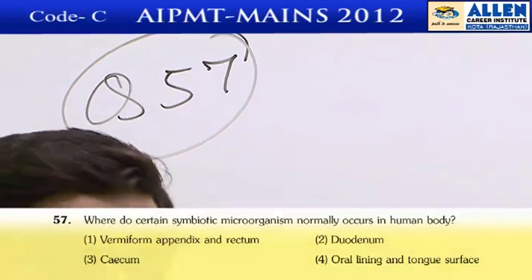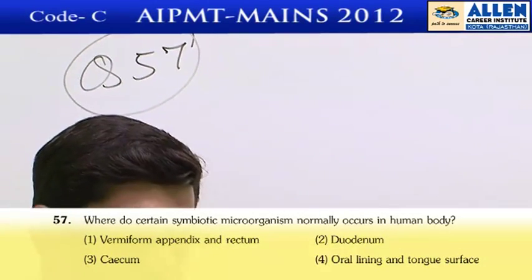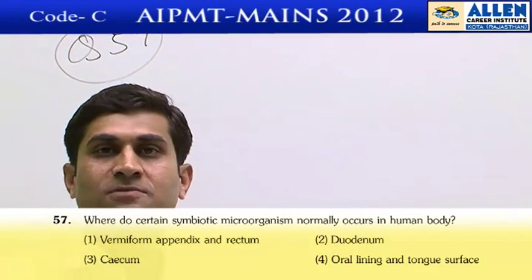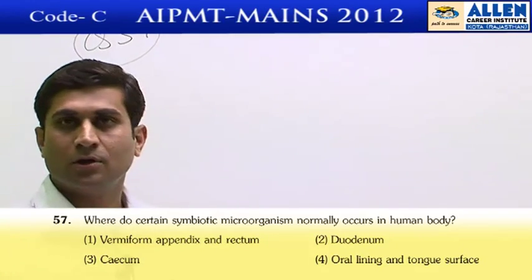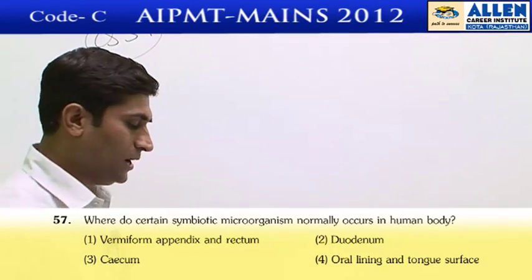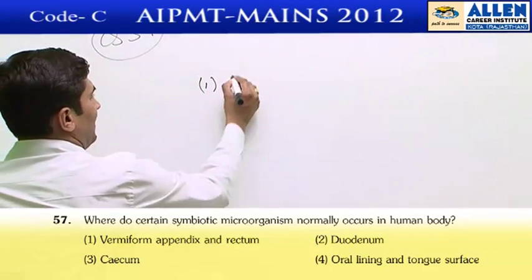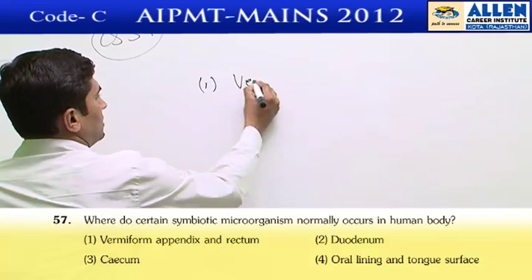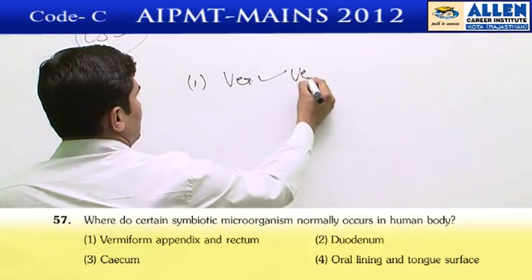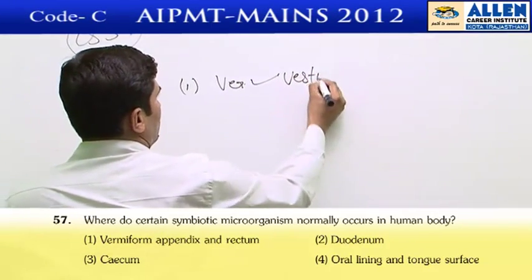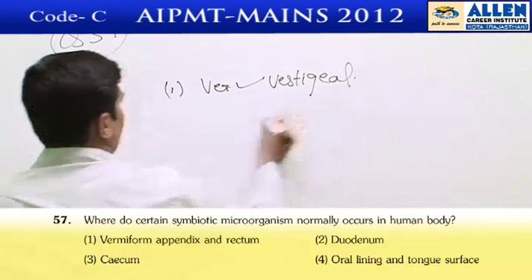Question number 57: in which location do symbiotic microorganisms occur in the human body? Option one is the vermiform appendix — this is vestigial, so there are no microorganisms here.